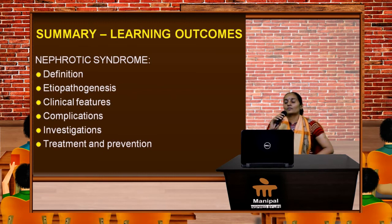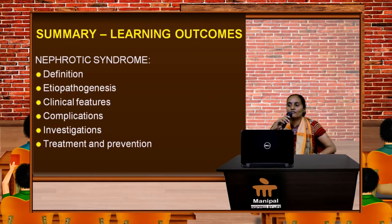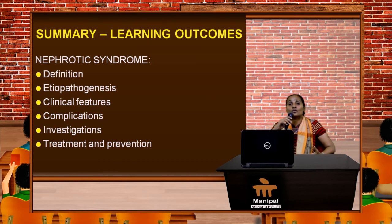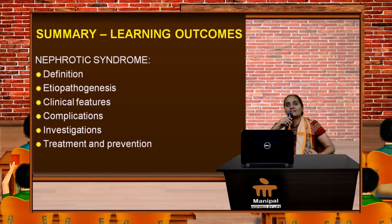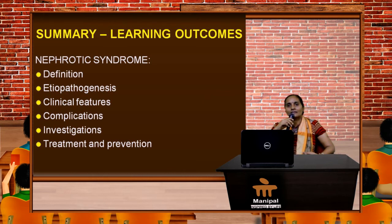To summarize today's learning outcomes: we are now able to define primary and secondary nephrotic syndrome, list the pathogenesis of these conditions, enumerate clinical features and correlate them with clinical conditions in problem-based scenarios or real patients, identify acute and chronic complications of nephrotic syndrome, request specific investigations with reasoning, and treat patients while preventing complications appropriately and on time.